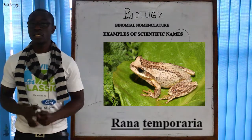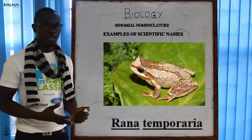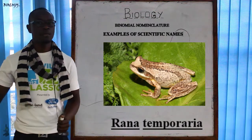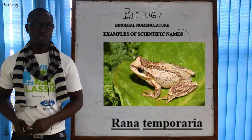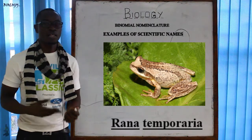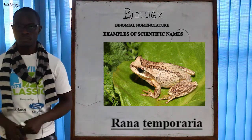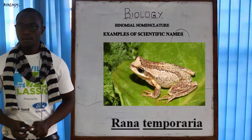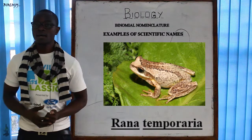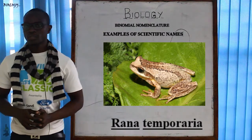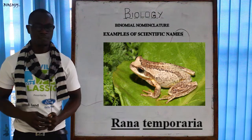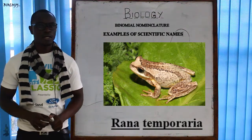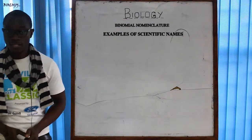What is the scientific name of the common frog? In English it is called a frog, but a scientist in China, Jamaica, or South Africa speaking another language wouldn't know what organism I mean if I say 'frog.' The scientific name of the common frog is Rana temporaria — Rana is the genus name while temporaria is the specific name.